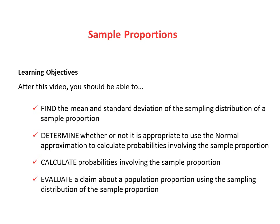After this video, you should be able to find the mean and standard deviation of the sampling distribution of a sample proportion, determine whether or not it is appropriate to use the normal approximation to calculate probabilities involving that sample proportion, calculate probabilities involving the sample proportion, and lastly, evaluate a claim about a population proportion using the sampling distribution of the sample proportion.